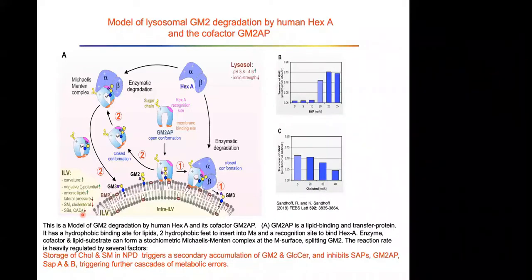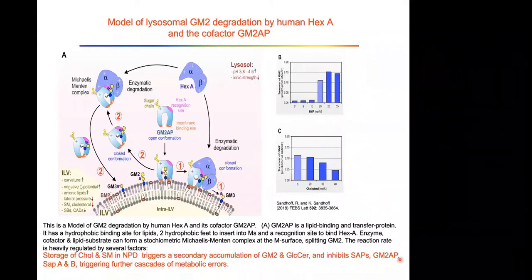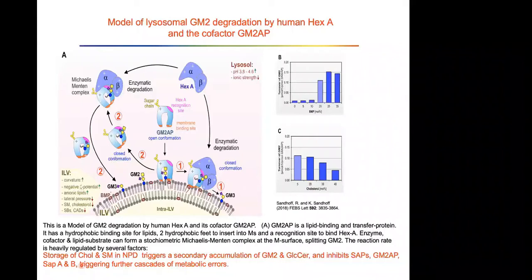Storage of cholesterol and sphingomyelin in Niemann-Pick disease triggers a secondary accumulation of glycolipids like GM2 and glucosylceramide, and inhibits the function of sphingolipid activator proteins (SAPs) — lipid binding proteins like GM2-AP, saposins A and B — whose function is pretty much inhibited by these lipids, triggering further cascades of metabolic errors.